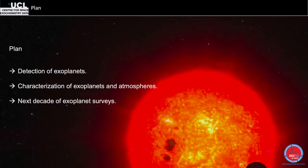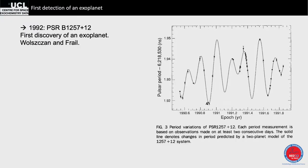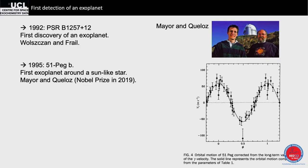Did you know the first detection of an exoplanet is actually not by Michel Mayor and Didier Queloz, but by two other researchers in 1992 around a pulsar and not around a normal star? It was in 1992, and then Mayor and Queloz got the Nobel Prize for 51 Peg b, a discovery in 1995. They found two planets based on the timing of pulsar pulsations, which were varying — and a pulsar doesn't vary. For Mayor and Queloz, the technique used was radial velocity.